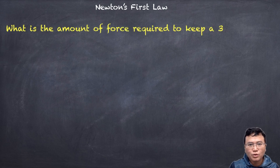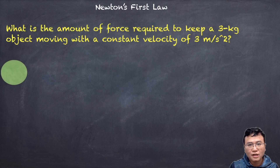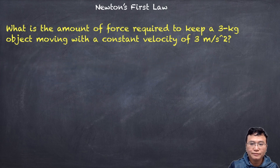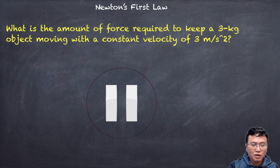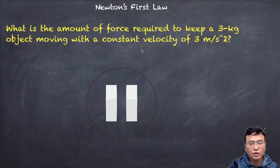What is the amount of force required to keep a 3-kilogram object moving with a constant velocity of 3 meters per second? The answer is: when you see the words 'constant velocity,' that indicates there is no acceleration. There's no change in velocity, so therefore the acceleration is zero, which implies that the net force is zero — there is no force.